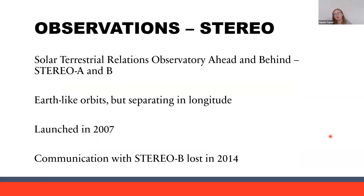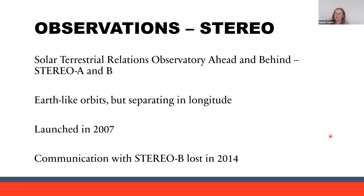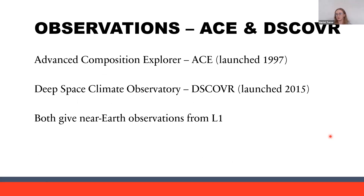The observations I've been using have been coming from the STEREO mission — Solar Terrestrial Relations Observatory — which has two spacecraft, STEREO Ahead and Behind, separated from Earth in longitude. They were launched in 2007, but communication with STEREO B was lost in 2014. So many of the forecasts I've been creating are technically hindcasts using archived data. I've also been using observations from ACE, the Advanced Composition Explorer, launched in 1997, and DSCOVR, the Deep Space Climate Observatory. Both of those give near-Earth observations from L1, which is on the Sun-Earth line.